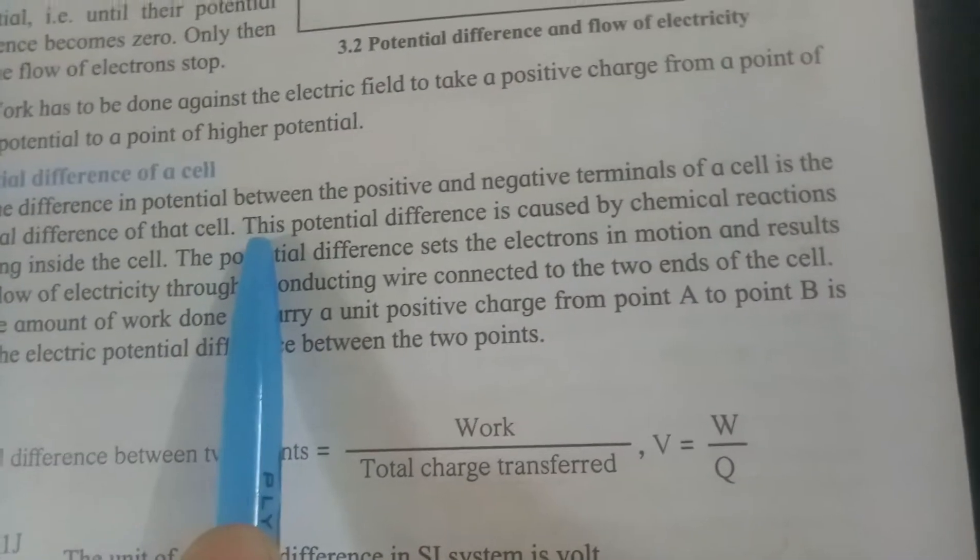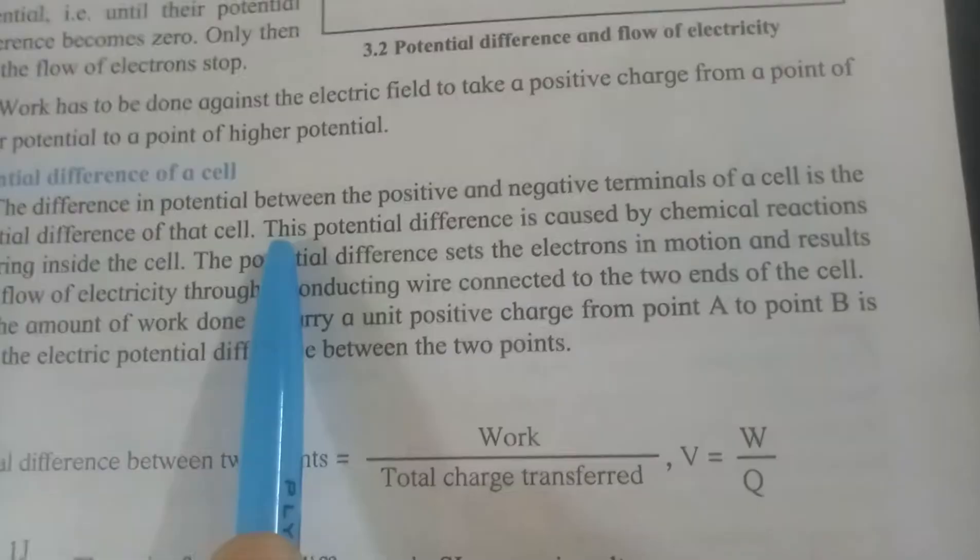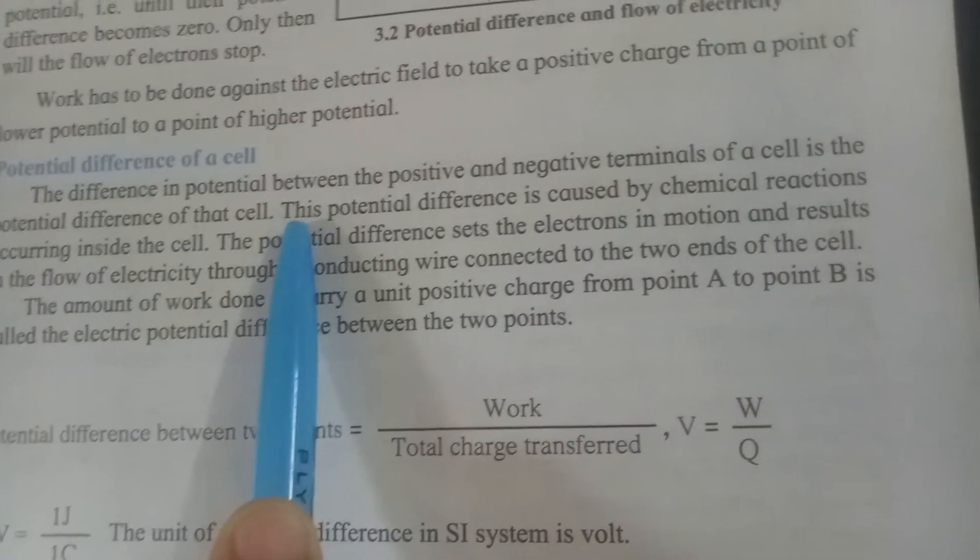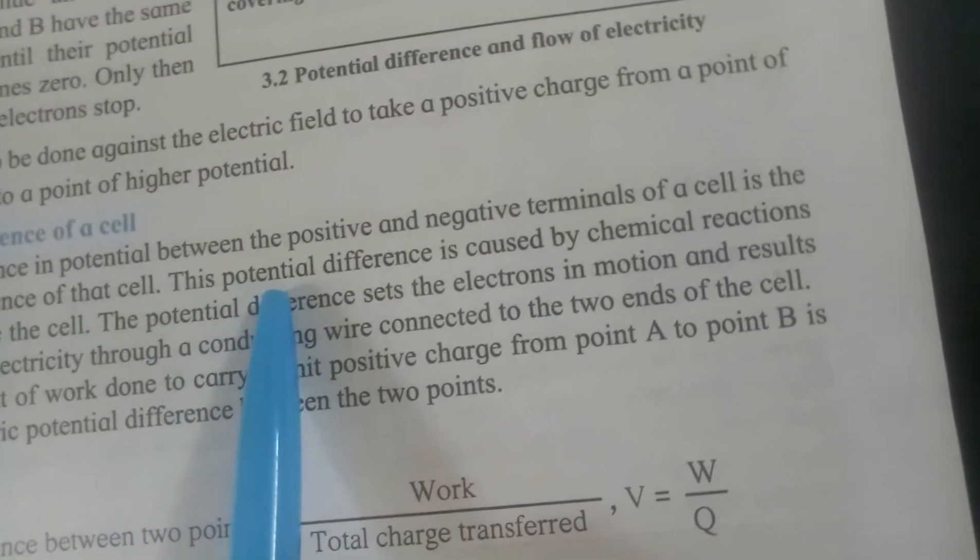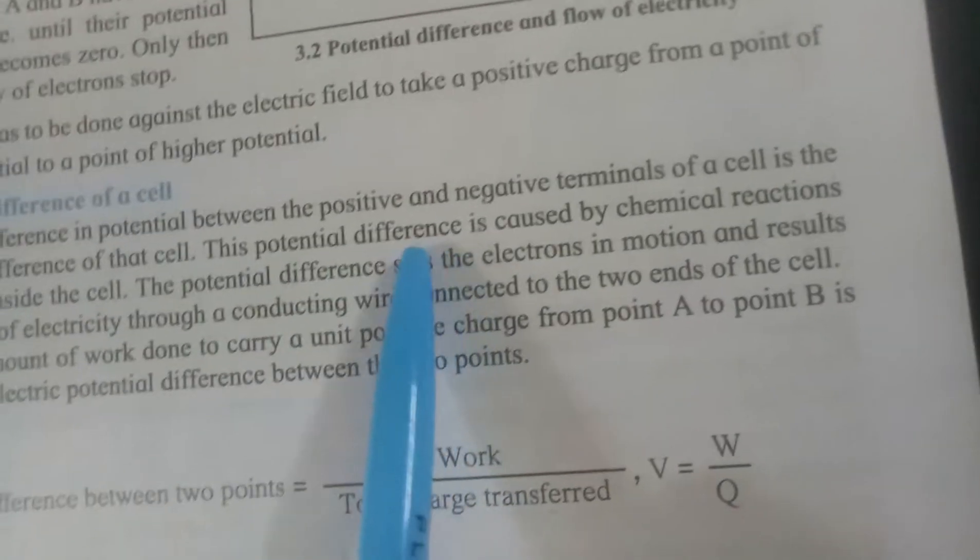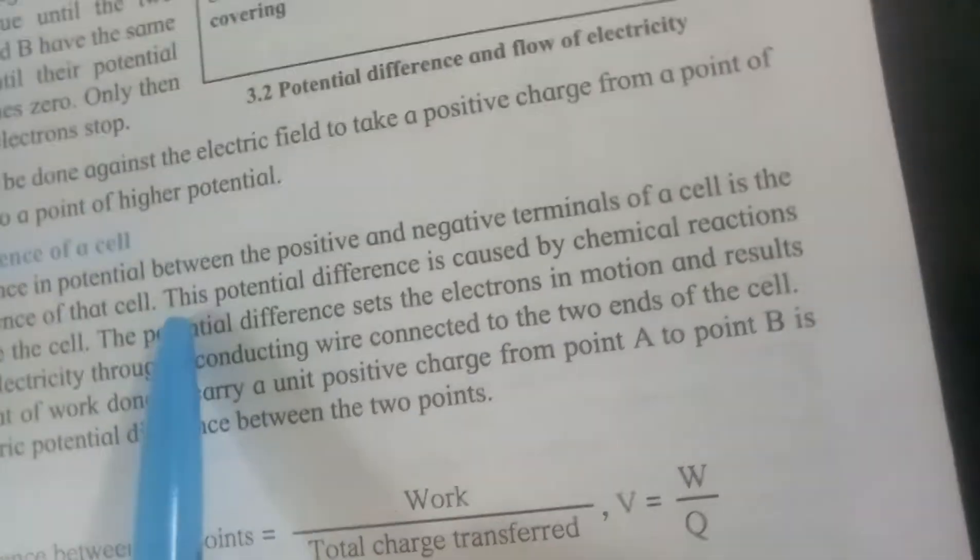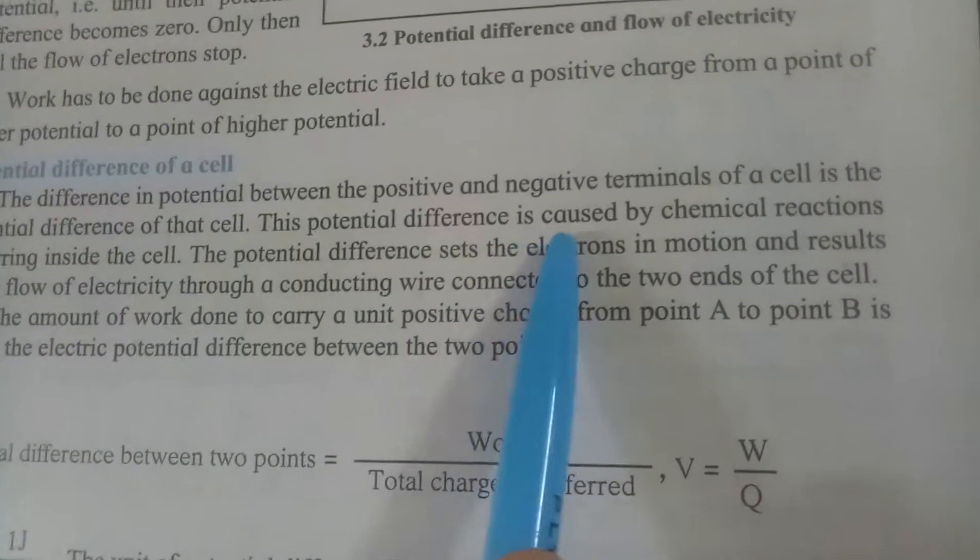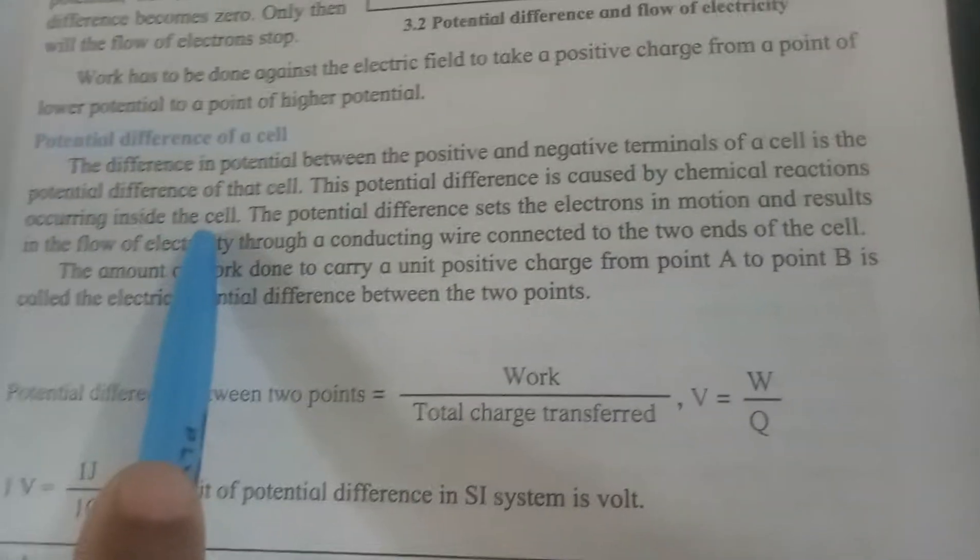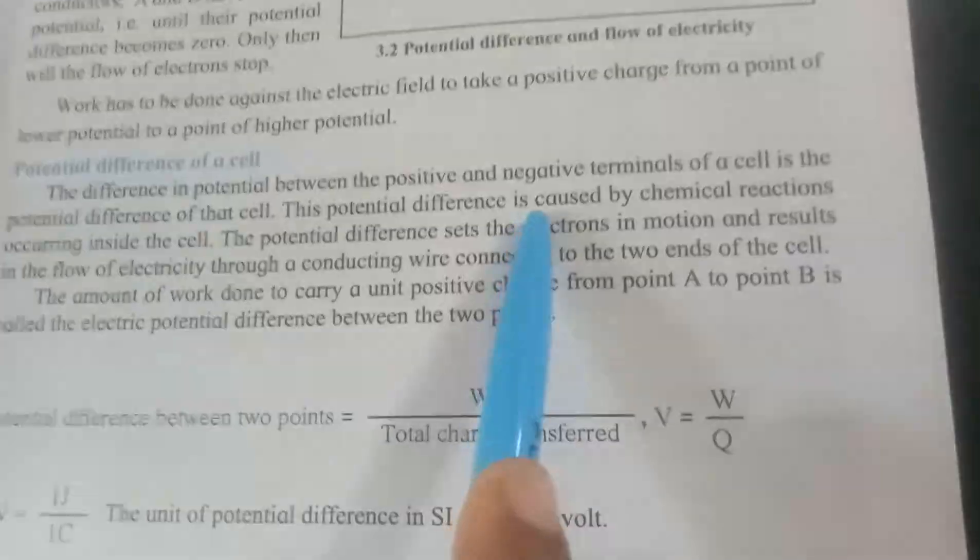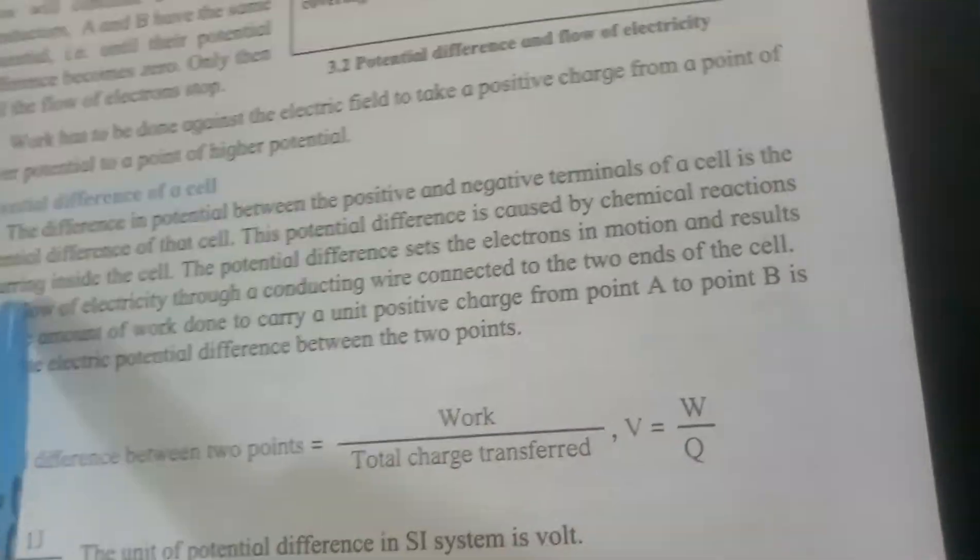So in that cell, we have seen that there were many chemicals. Zinc and other chemicals were there. Sulfur. So the cells are made up of many chemicals. Means only when potential difference is created, what happens? Chemical reaction occurs in the cell. This potential difference is caused by the cell.